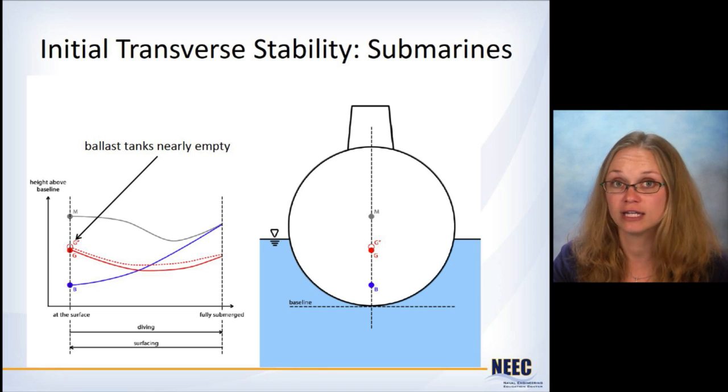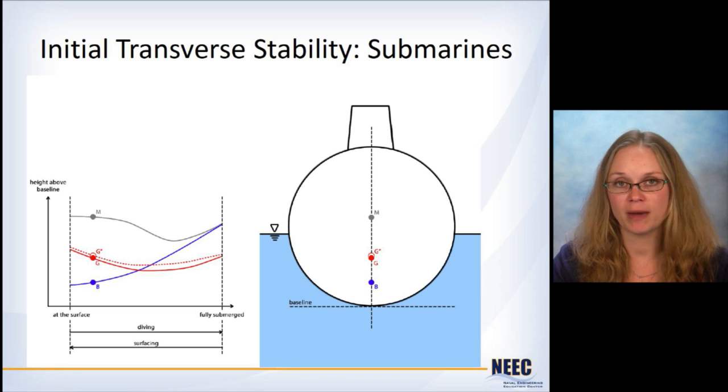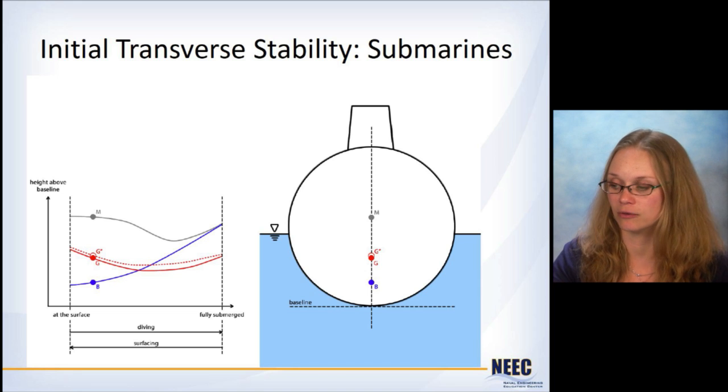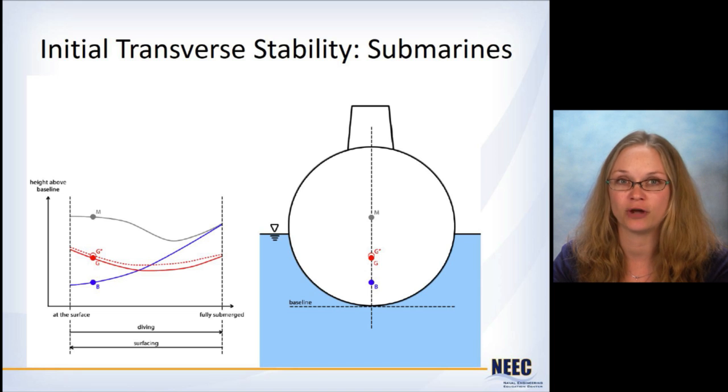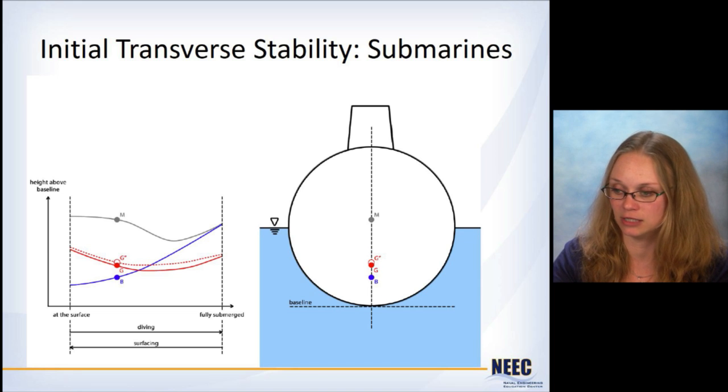Now, you get the call to dive. And so you start filling ballast tanks. You fill the ballast tanks, the submarine starts to sink lower into the water. This is causing B to rise, but G to drop because you're adding water into the ballast tanks. And then G double prime is tracking along with G.